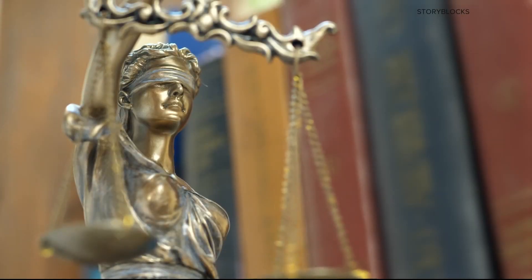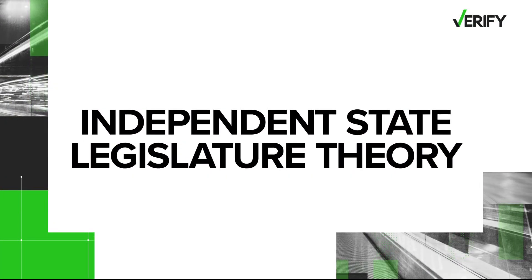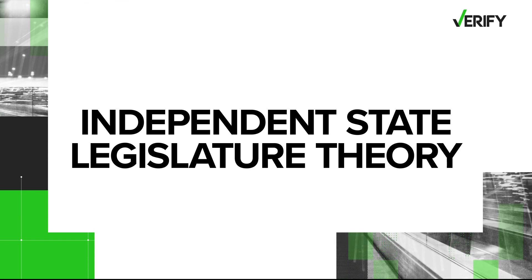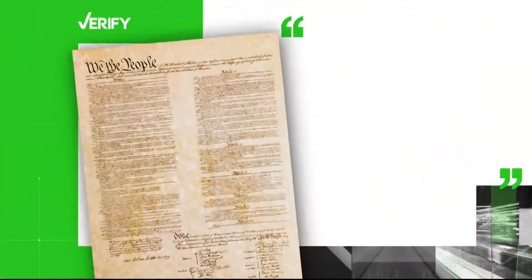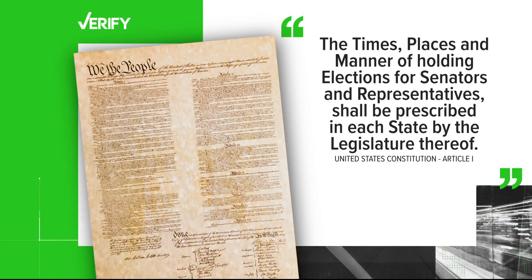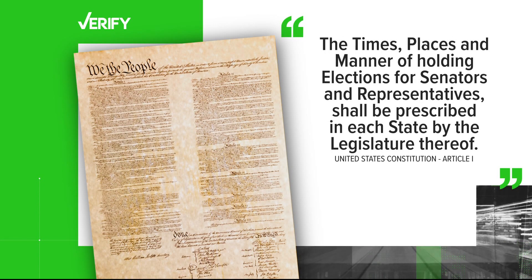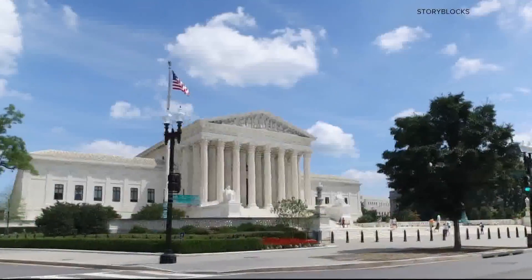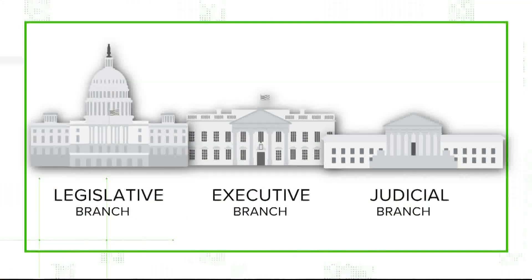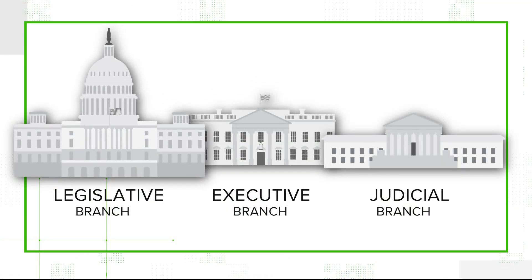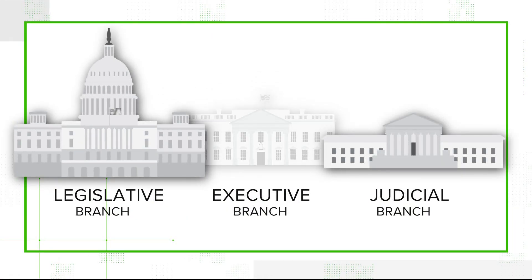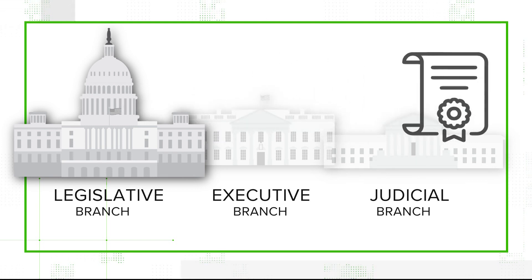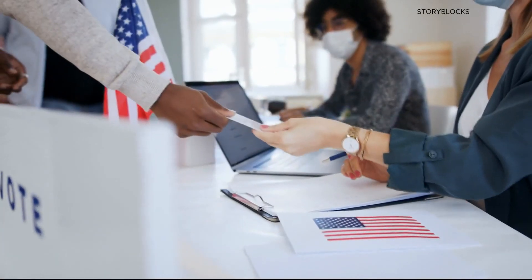The lawmakers' argument hinges on a political concept called the Independent State Legislature Theory, based on the Constitution's Election Clause, saying the time, place, and manner of holding elections for senators and representatives shall be prescribed in each state by the legislature thereof. If the court lands on the side of North Carolina House Speaker Tim Moore and his Republican colleagues, Fredrickson explains it could mean state legislatures can act independently and governors and state courts would have no ability to check laws related to federal elections.